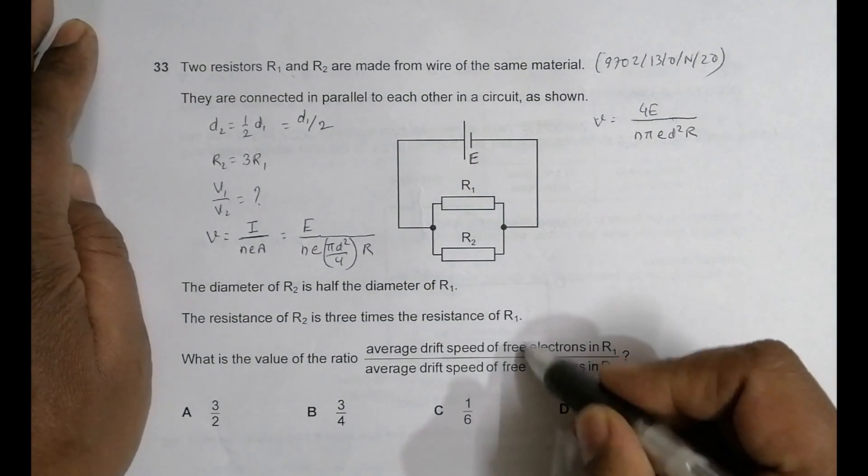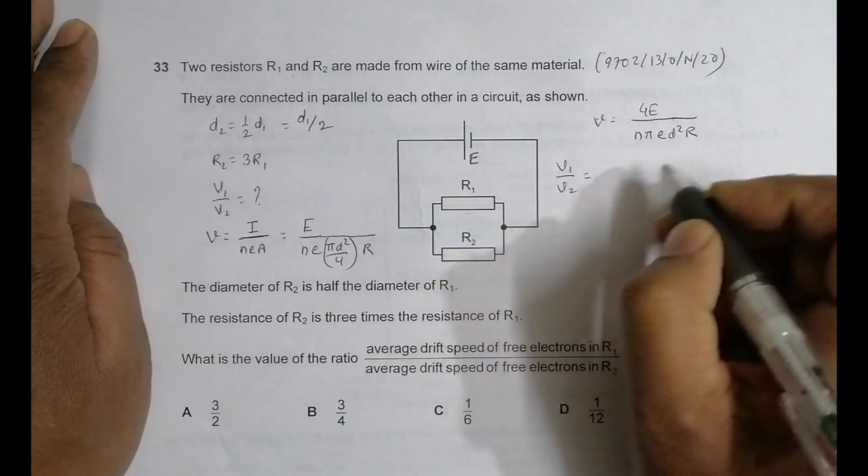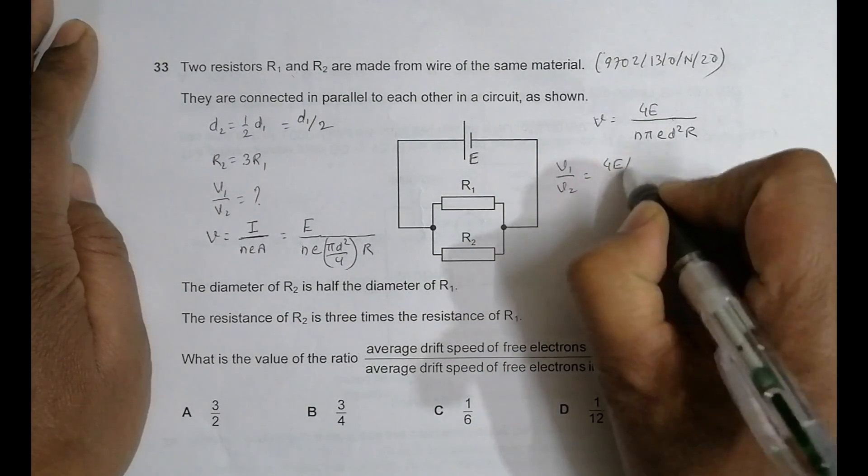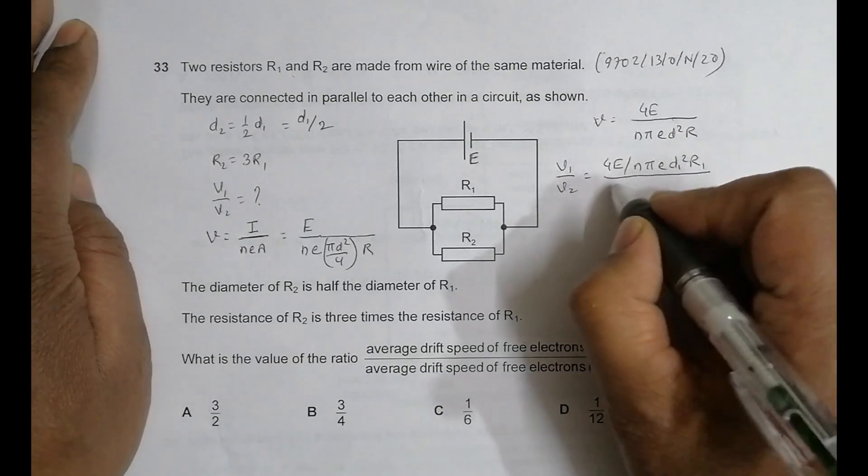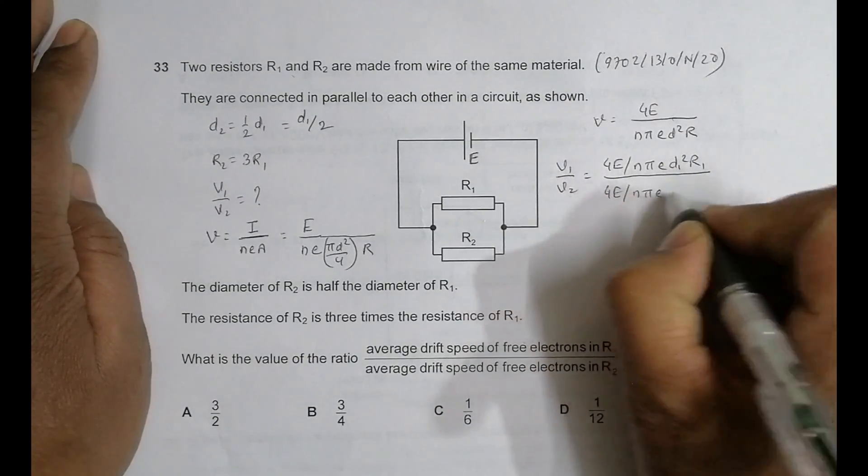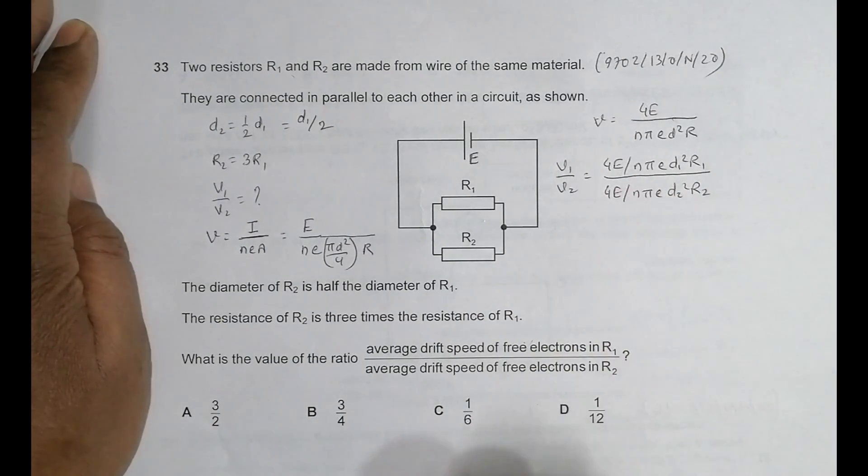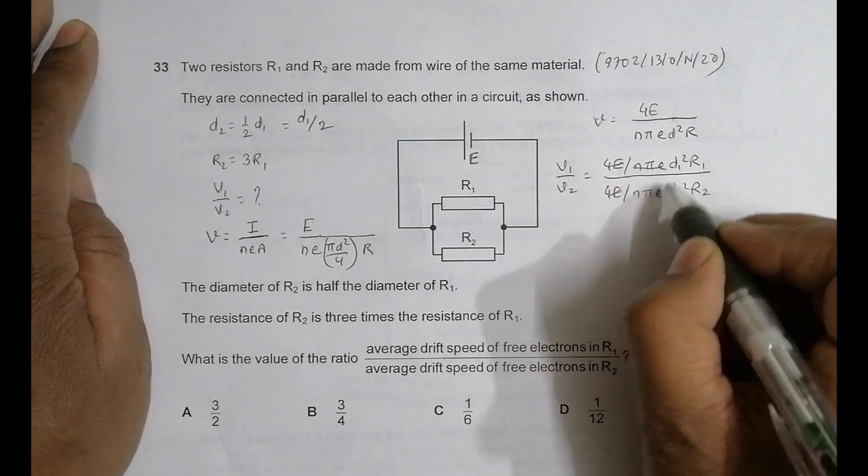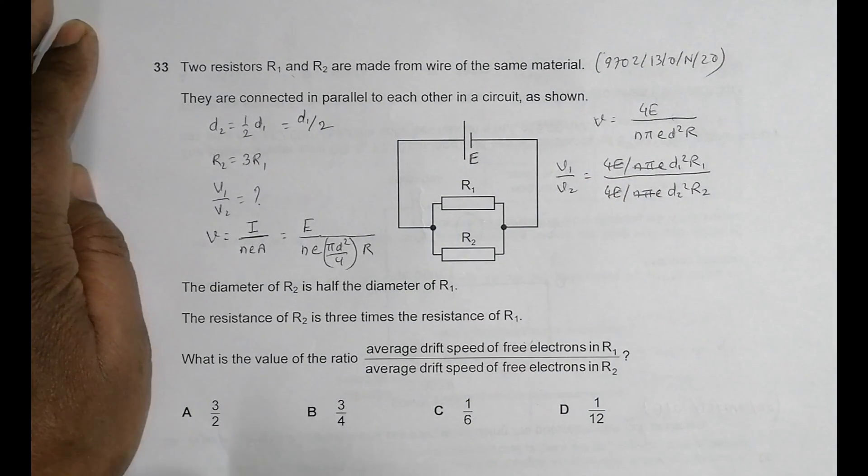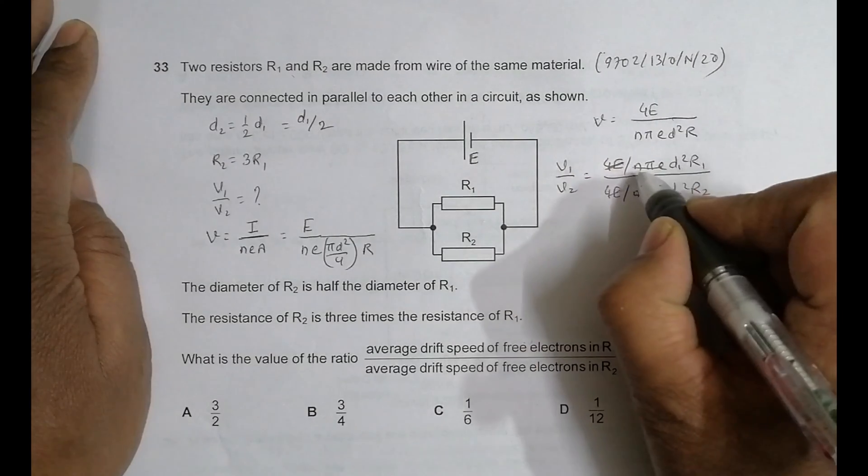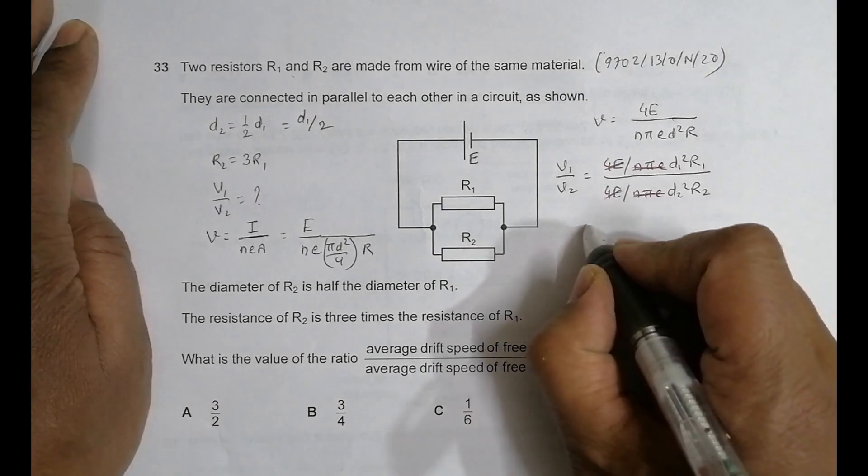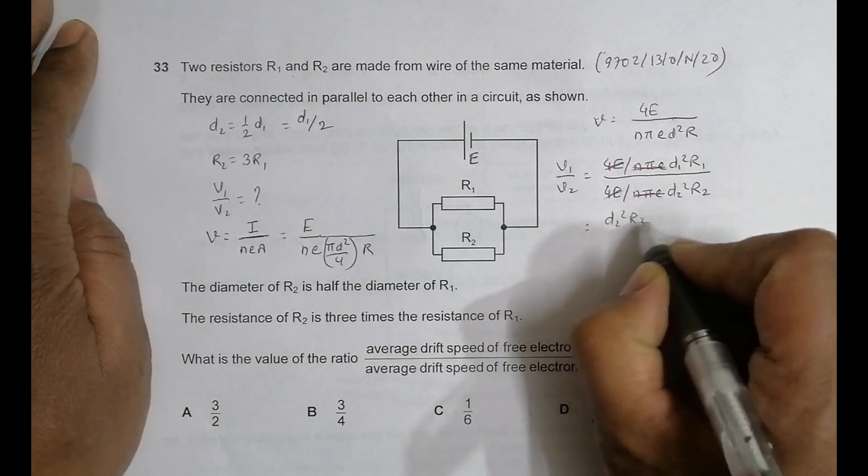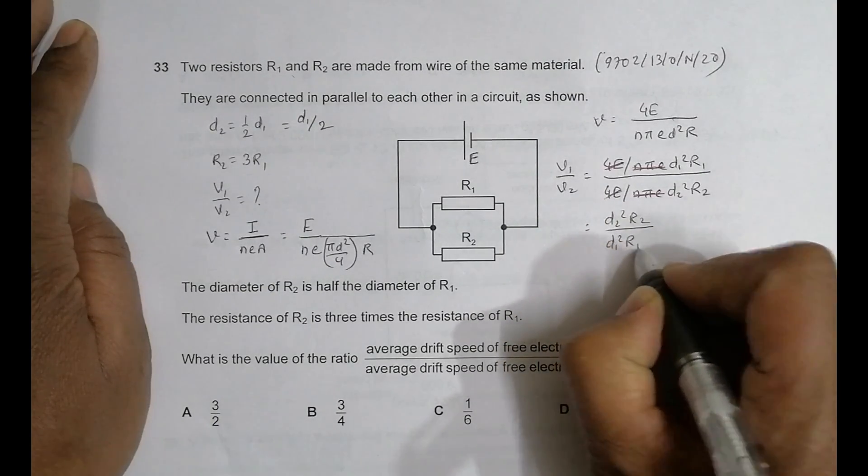Now V1 by V2 will be equal to (4E divided by NπED1²R1) divided by (4E divided by NπED2²R2). These terms cancel out - 4E cancels, Nπ cancels, E cancels. This gives us V1 by V2 equals D2²R2 by D1²R1.